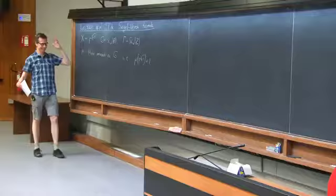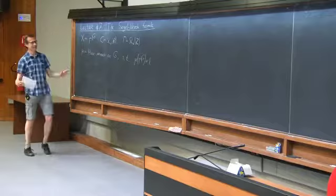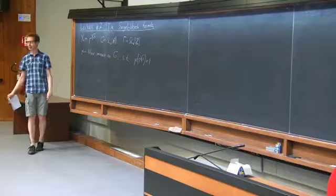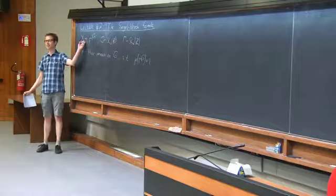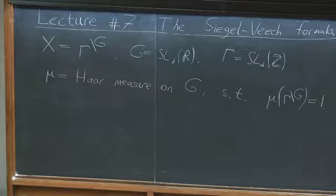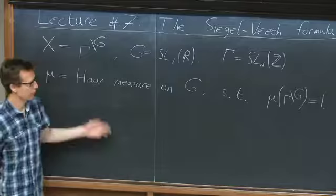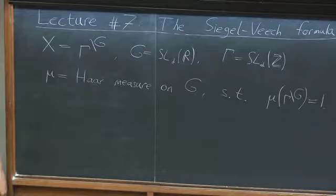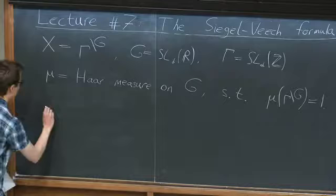Let me talk about what a random lattice is. This homogeneous space is identified with the set of Euclidean lattices of covolume 1. If we pick a random point in X with respect to this probability measure, this gives rise to a random lattice. It is natural to call this a random lattice.